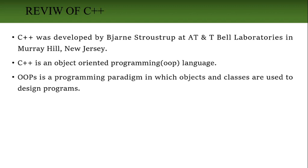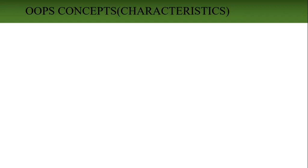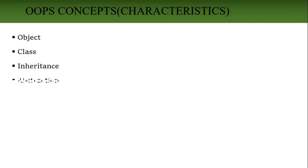OOP contains main concepts and characteristics we already discussed in last class. Just we will see a review. The main concepts in OOP are: object, class, inheritance, abstraction, polymorphism, and encapsulation. These are the main characteristics of OOP. Let's see them one by one.